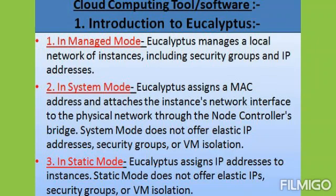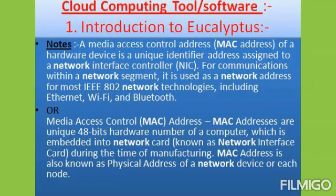There are three networking modes in Eucalyptus software: first is managed mode, second is static mode, and third is system mode. In managed mode, Eucalyptus must manage a local network of instances, including security groups and IP addresses.